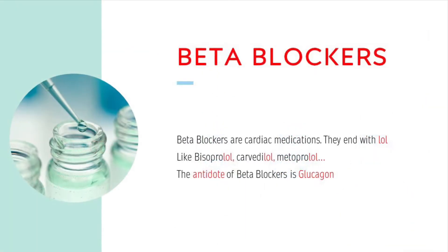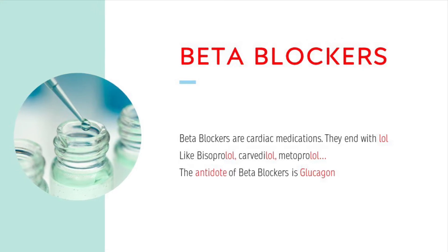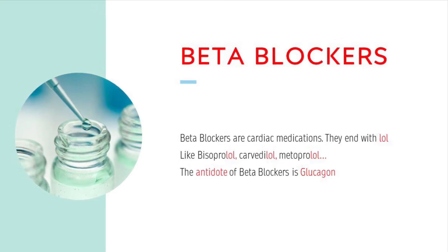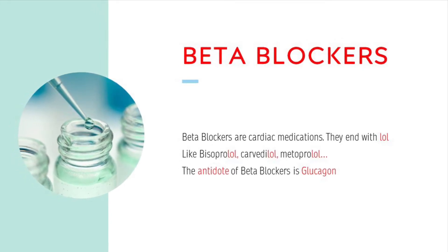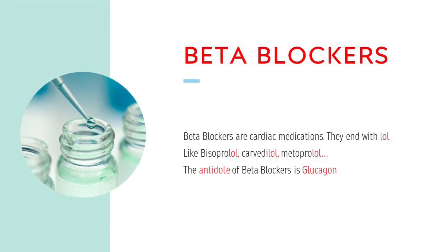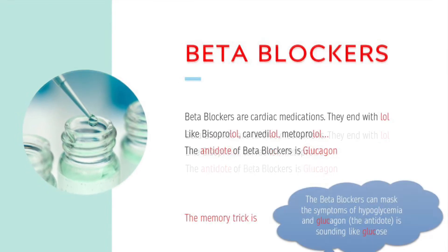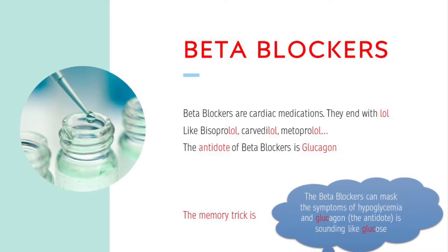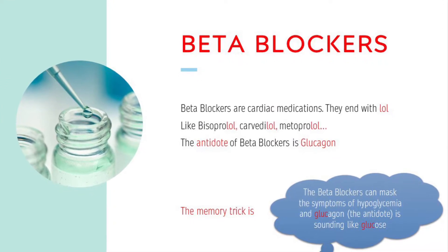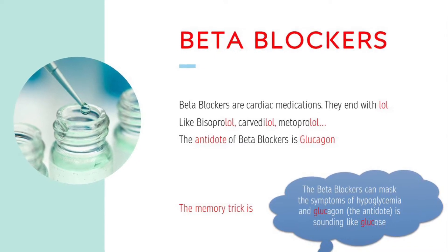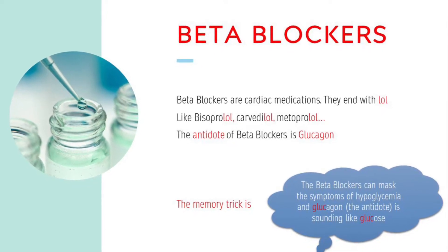Beta blockers are cardiac medications. They end with LOL like bisoprolol, carvedilol, metoprolol. The antidote of beta blockers is glucagon. The memory trick is that beta blockers can mask the symptoms of hypoglycemia, and glucagon, the antidote, sounds like glucose.